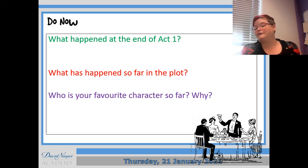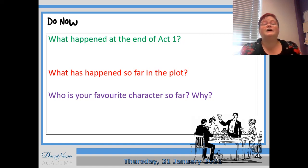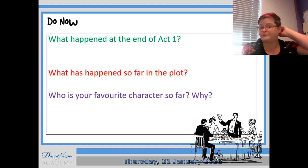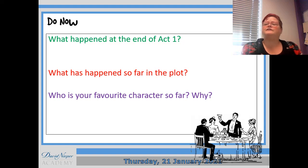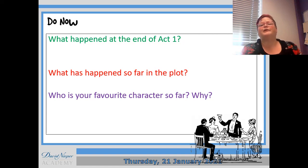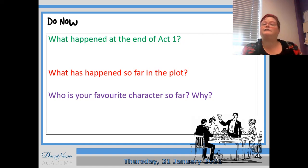Then the inspector arrives and spoke to Mr. Birling about Eva and the fact that she was a striker and then he fired her for it. And then right at the end we found out that Gerald and Sheila had a bit of a confrontation, and Gerald admitted he cheated as well, which again is part of that plot.